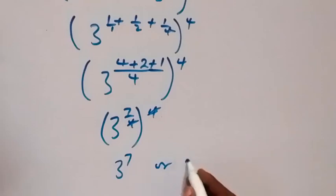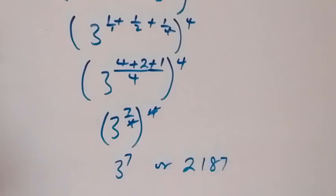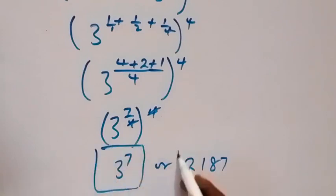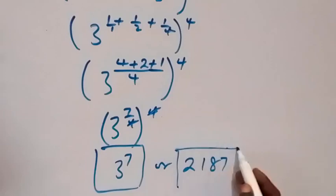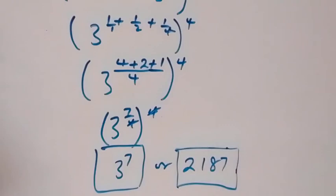Or we can write it as 2187. So whichever method we use, this gives us 3 raised to power 7, or 2187. Thank you for watching. Don't forget to subscribe for more videos and turn on the notifications. Share this video and give it a thumbs up.